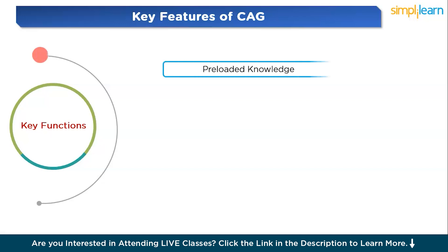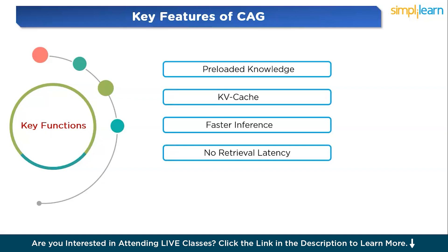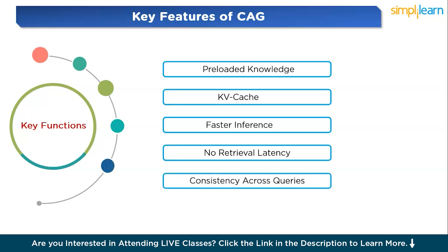In summary, CAG's key features include preloaded knowledge, a key-value cache, and faster inference by eliminating real-time document retrieval. There is no retrieval latency — unlike RAG, where each query triggers a retrieval process that introduces delay. CAG ensures no delay caused by waiting for external information. It also provides consistent responses across all queries, since the model references the same preloaded cache every time, ensuring consistency across multiple interactions.